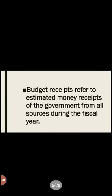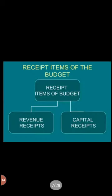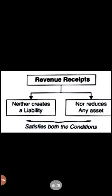Budget receipts refer to the estimated money receipts of the government from all sources during the fiscal year — that means all the money the government has received in the fiscal year. Receipts can be divided into two types: revenue receipts and capital receipts.